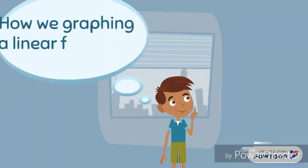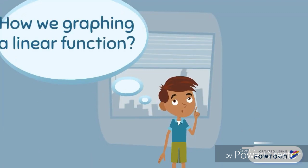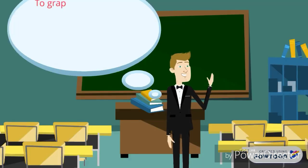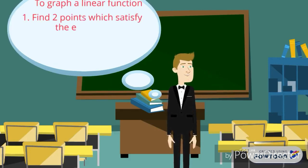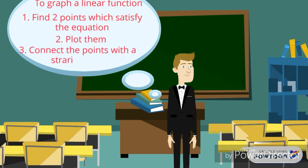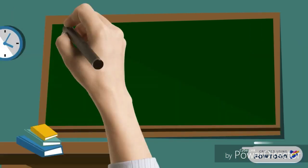How do we graph a linear function? To graph a linear function, first find two points which satisfy the equation. Then plot them, and connect the points with a straight line.